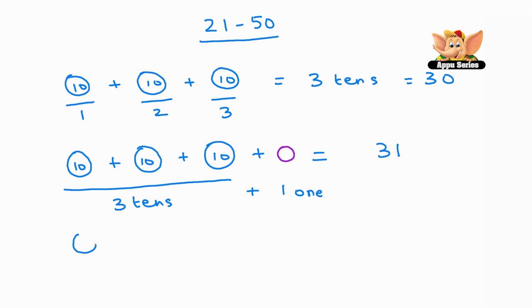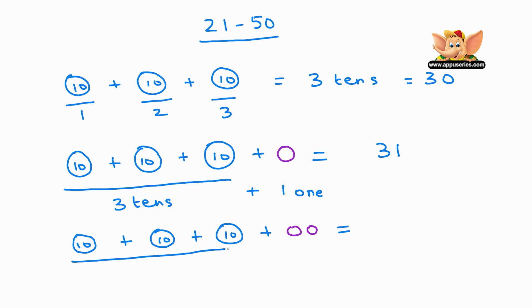Now let's try another one. There are three circles and each circle is a 10, plus two grapes. That's three 10s plus two 1s equals 32, and so on and so forth.